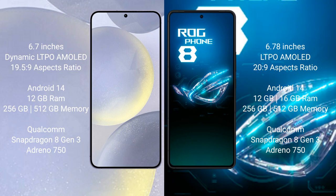The Samsung Galaxy S24 Plus runs on the Android 14 operating system. The ASUS ROG Phone 8 also runs on the Android 14 operating system. The Samsung Galaxy S24 Plus comes with 12 GB RAM and 256 GB internal storage, with a Qualcomm Snapdragon 8 Gen 3 processor and Adreno GPU.